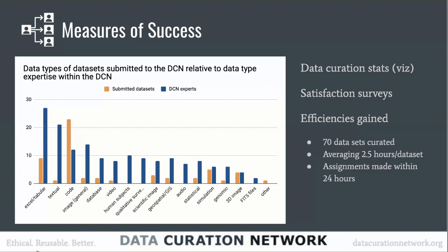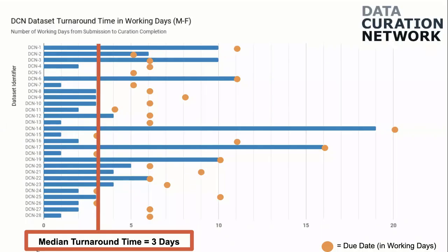The graphic does give us an example of what we thought we'd need versus what we're seeing. Turnaround time is an important piece for us — researchers are often depositing when they need the data now. A lot of our deposits come due to journal requirements for data sharing. Researchers are looking to get their DOI and resolve issues with the publisher. We often put a deadline of about five working business days for a curator, and we are seeing a median turnaround time of three days.